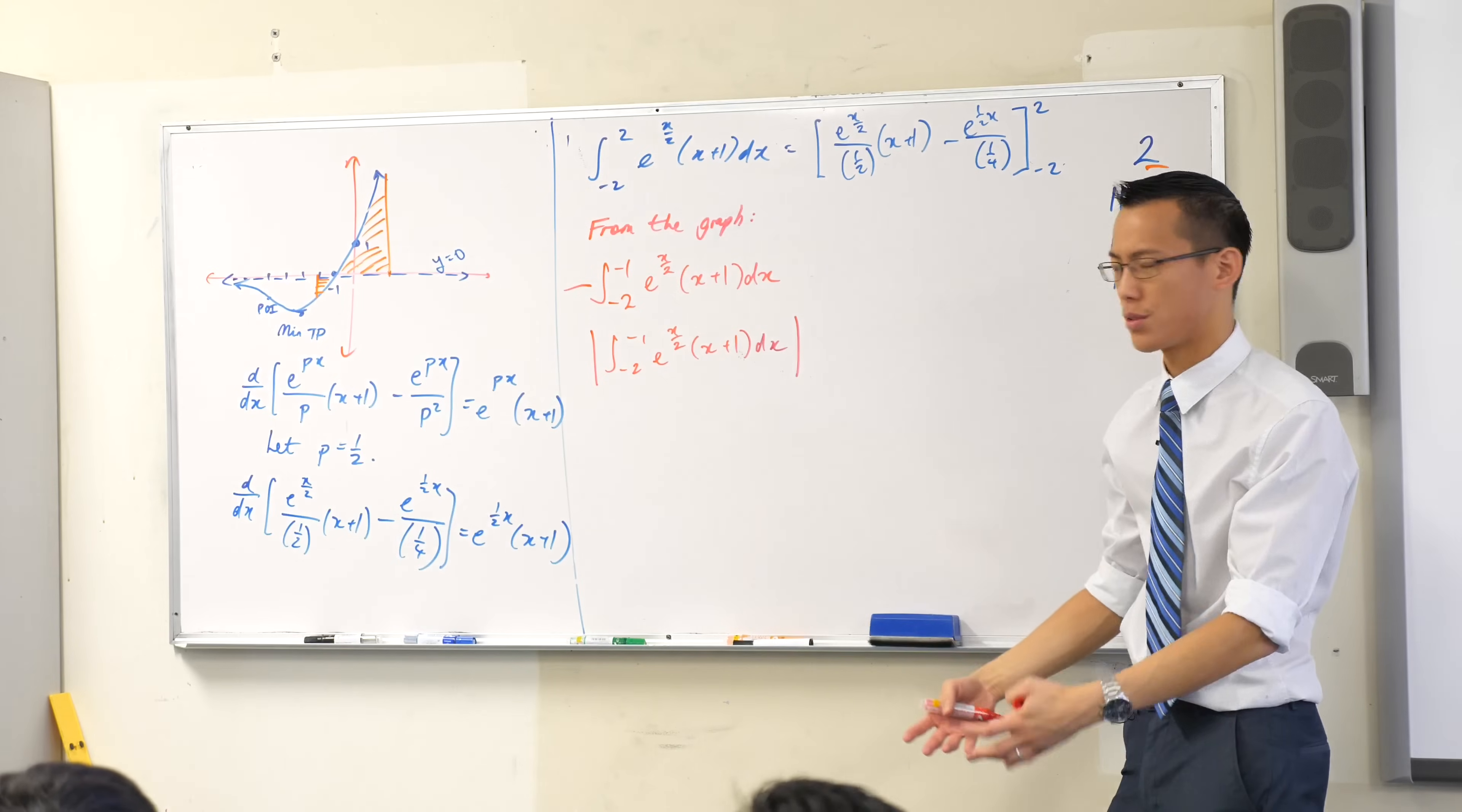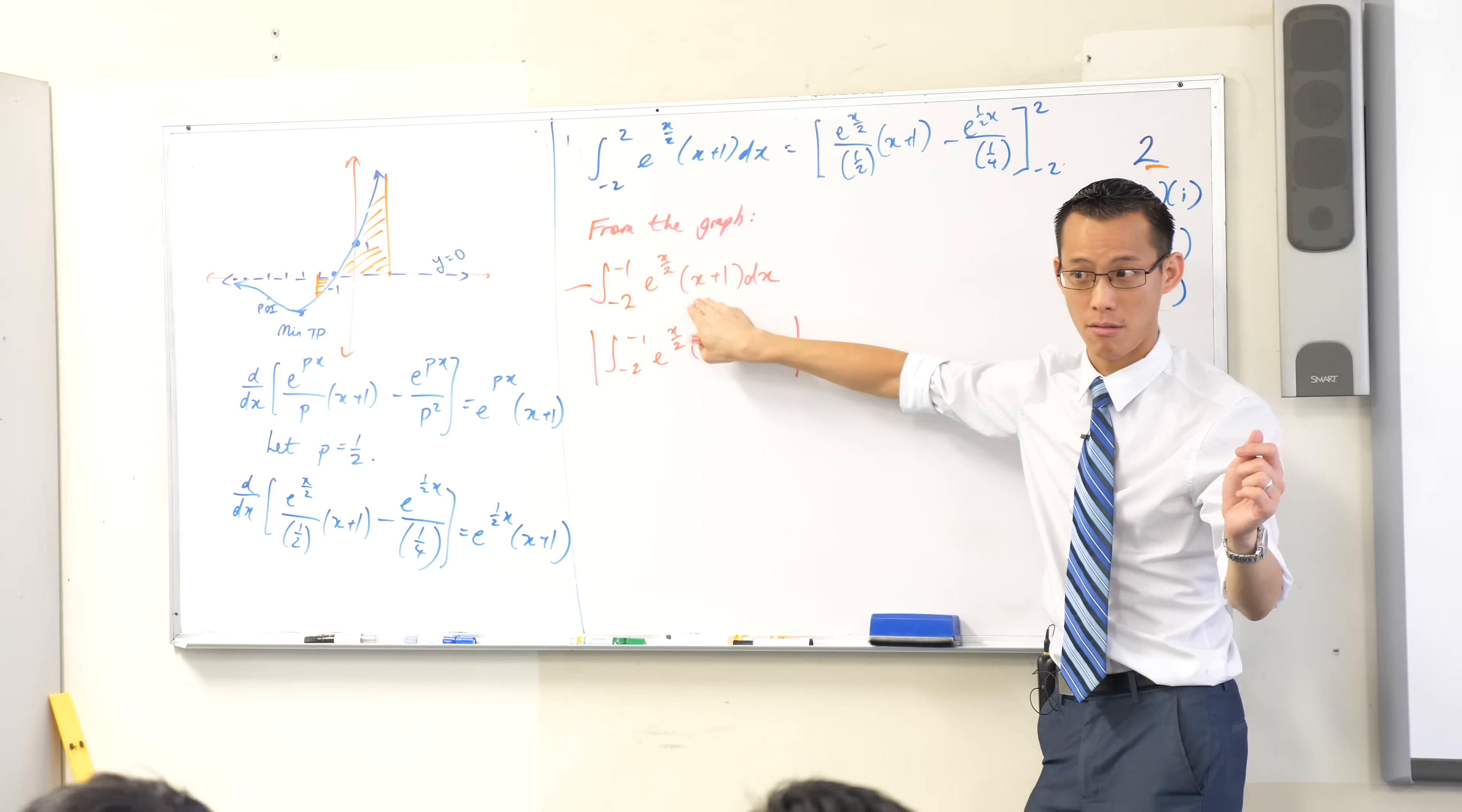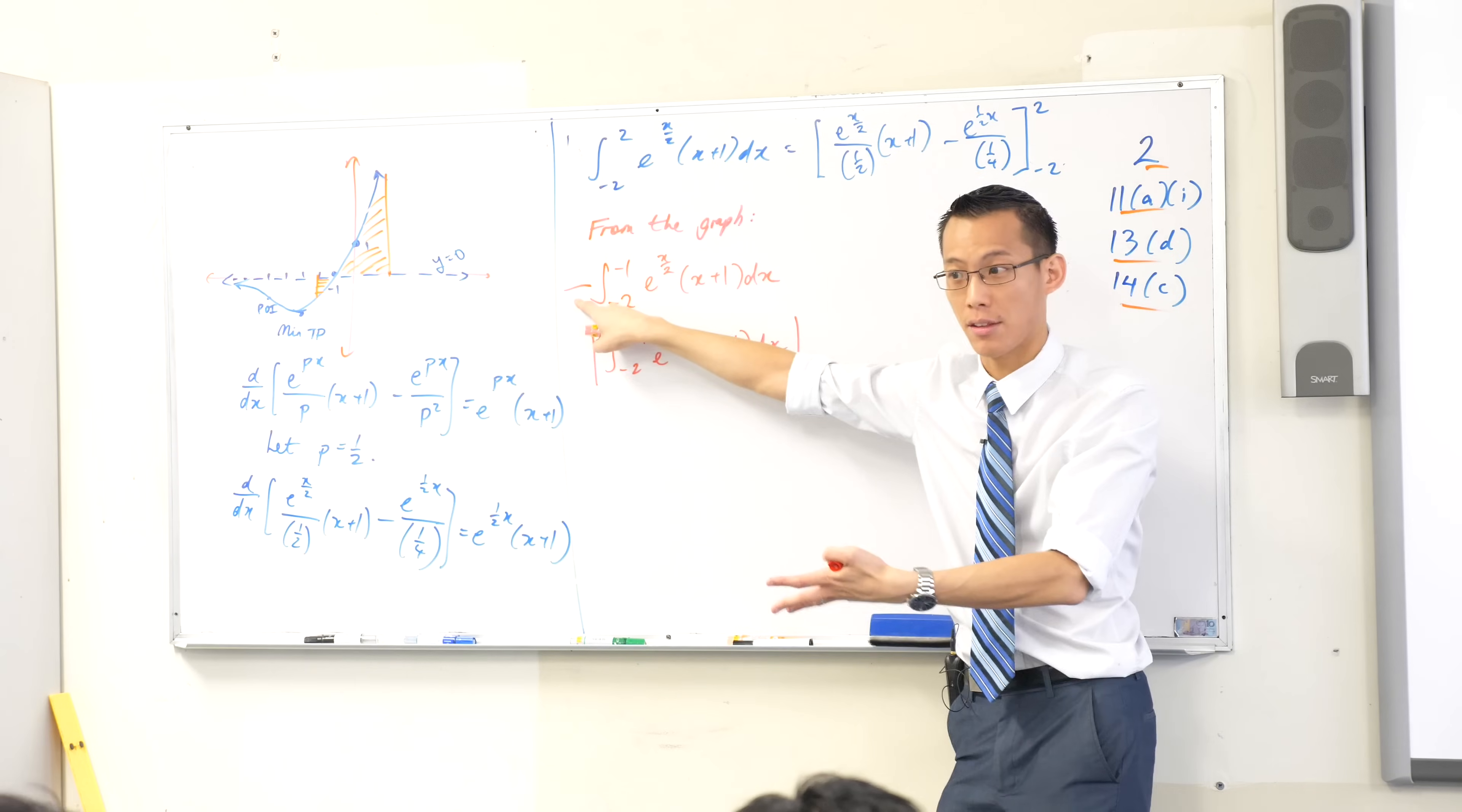So I would prefer you to say, I know that this, when I evaluate it, will be negative. How do I know it will be negative? Because the graph tells me it's beneath the axis. And I know how to restore that, by putting a minus sign out the front.